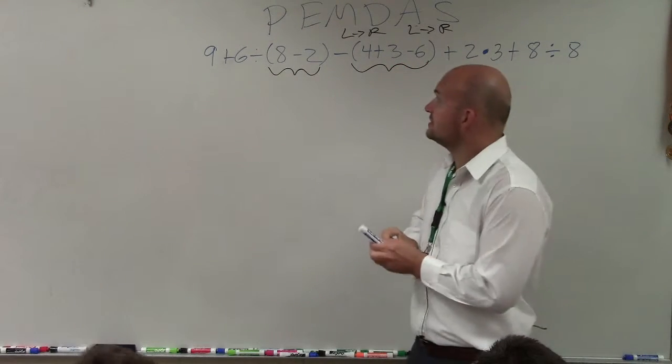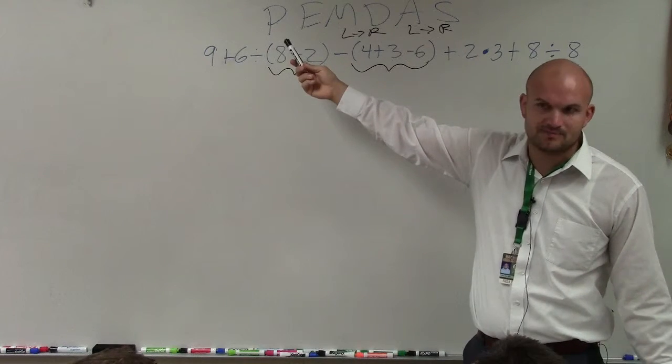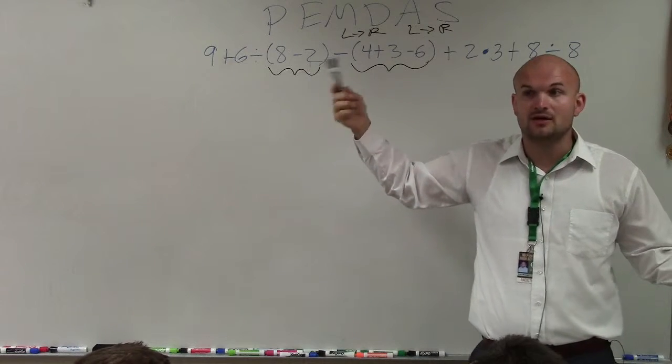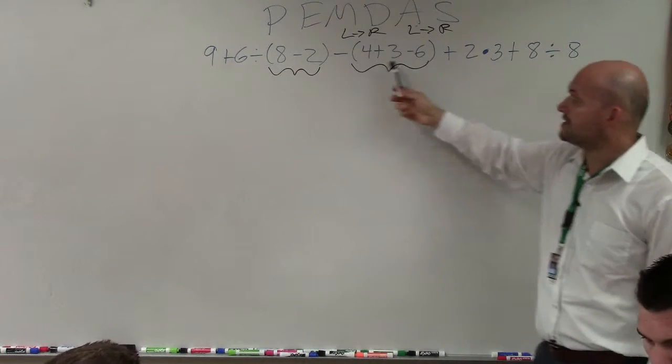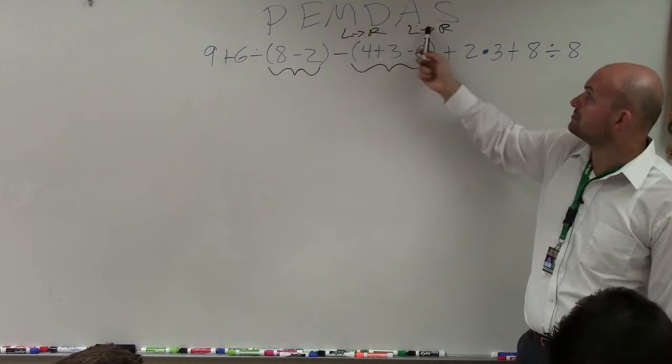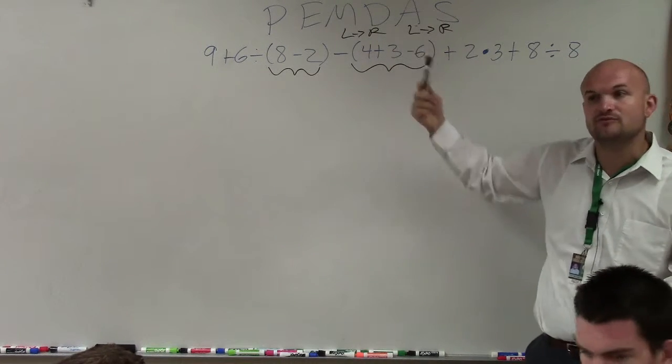And then I look at this and I say, are there any exponents? No, there's no exponents, right? So then I go multiplication and division. All right, now I need to multiply and divide from left to right. Well, actually, I don't have any multiplication or division, do I? So then all I simply need to do is do addition and subtraction from left to right.